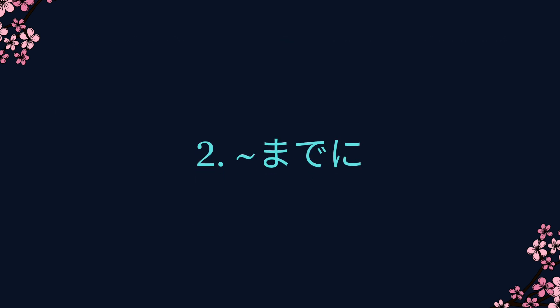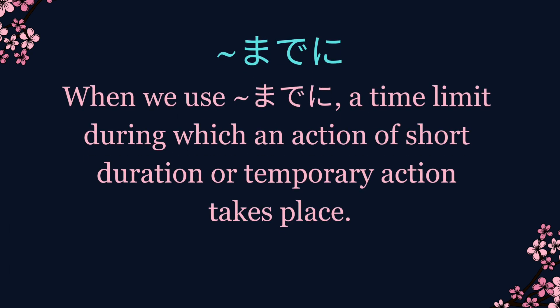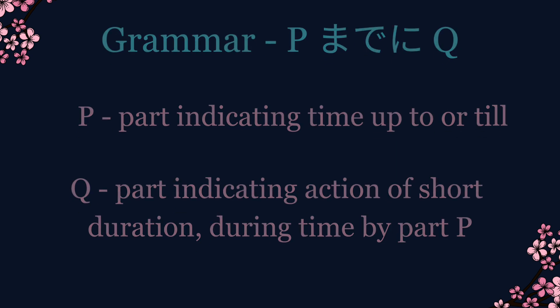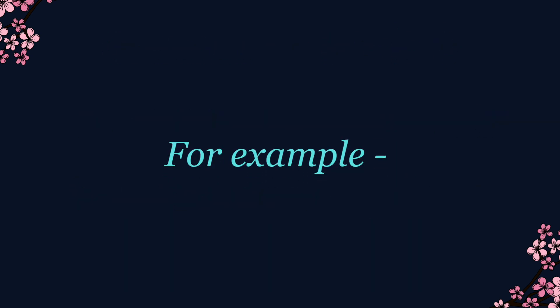Second, までに (made ni). When we use までに in a sentence, it works the same as まで and shows a time limit. However, the action, behavior, or state is not a continuous one but an action of short duration or a temporary action. The grammar is: P までに Q, where P is the time limit and Q is the action of short duration.